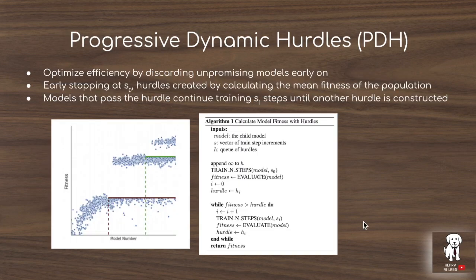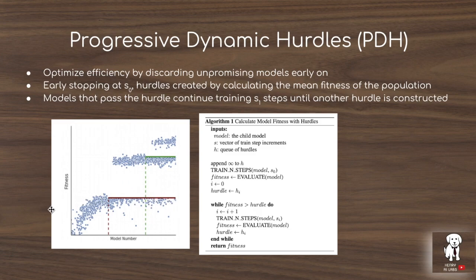To overcome the computationally demanding evaluation, they introduce progressive dynamic hurdles. They stop training of populations at certain intervals denoted as S_0, S_1, S_2 — vectors of training step increments. Once they reach a training step increment, they stop training, compute the median fitness of the population, and truncate the search by only allowing training to proceed on models that are above the median fitness. This repeats across successive hurdles. This is similar to algorithms like Hyperband — a resource allocation technique to avoid wasting computation on non-promising models.